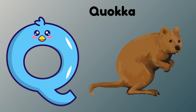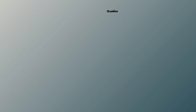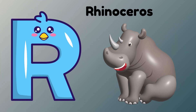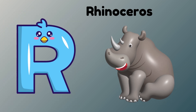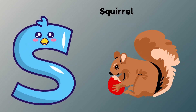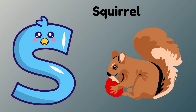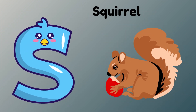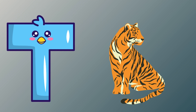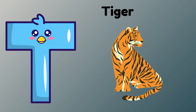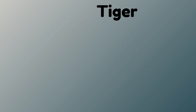Q is for Quokka. Qu. Quokka. R is for Rhinoceros. R. Rhinoceros. S is for Squirrel. S. Squirrel. T is for Tiger. T. Tiger.